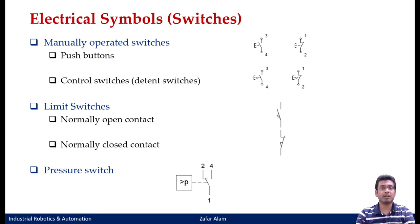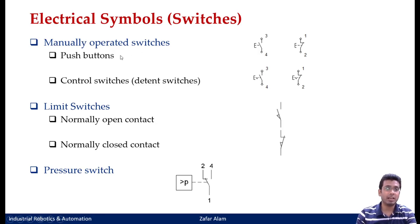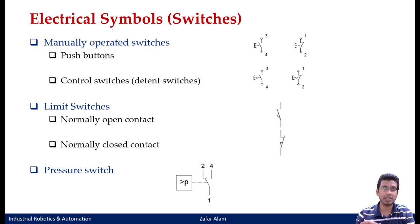Now we will see what are the different symbols for our switches. The first category is manually operated switches — in this you have your push button and your control switches which are detentive in nature, also known as detent switches. We have discussed the working principle of all these switches in detail in the previous class. Here, we are just going to stick to the symbols. Even in the push buttons, you will have two categories: one is your normally open part and the other is your normally closed.